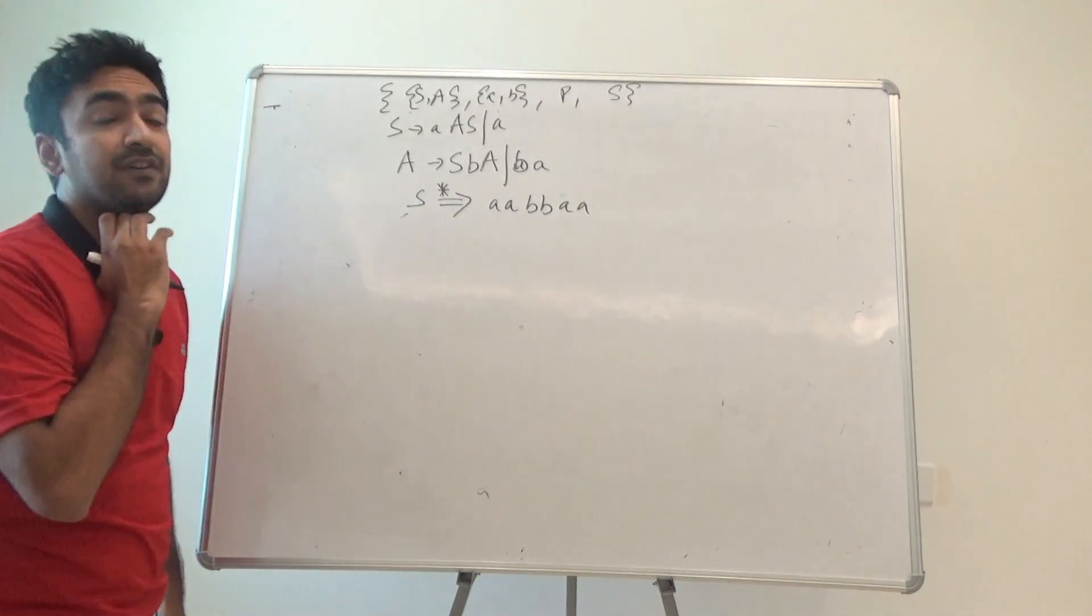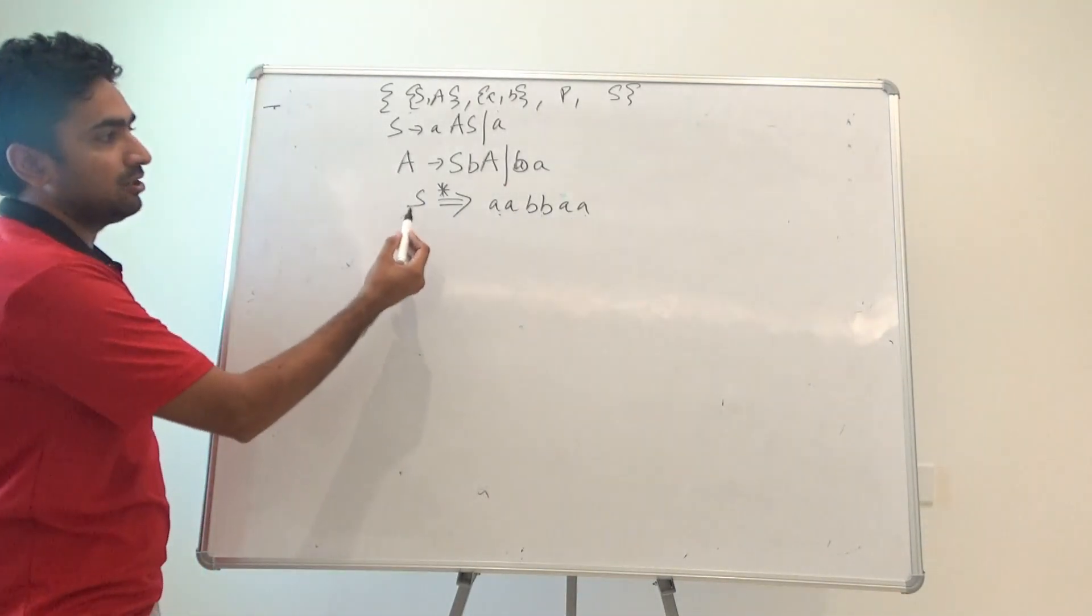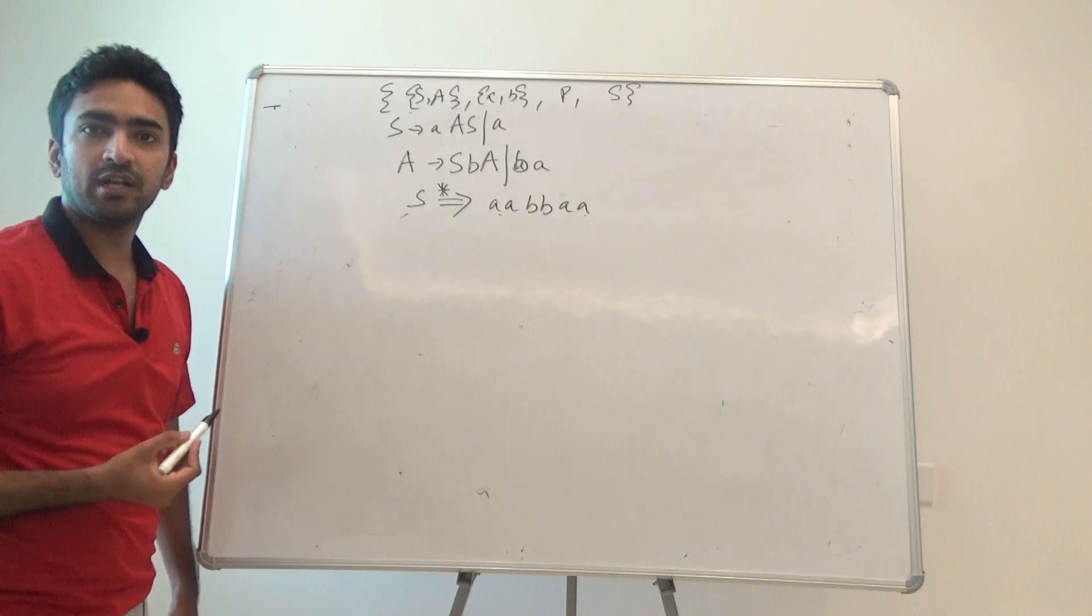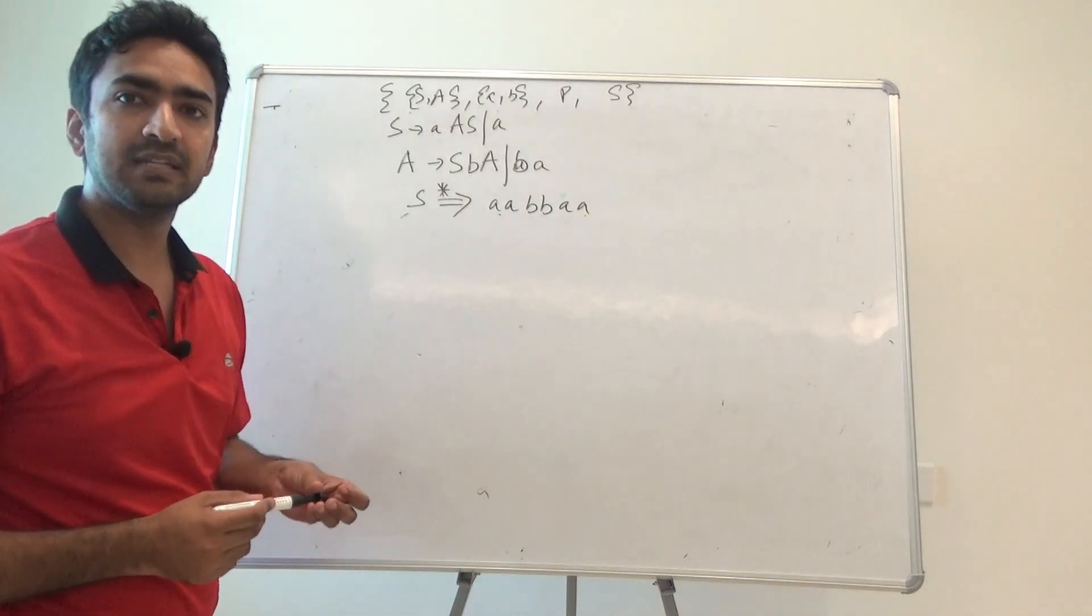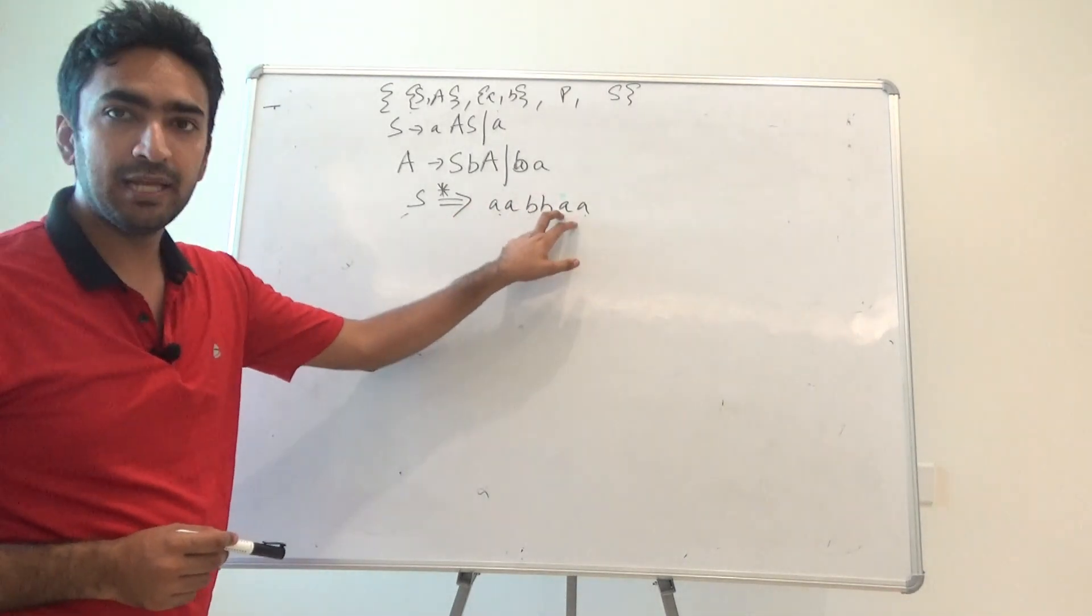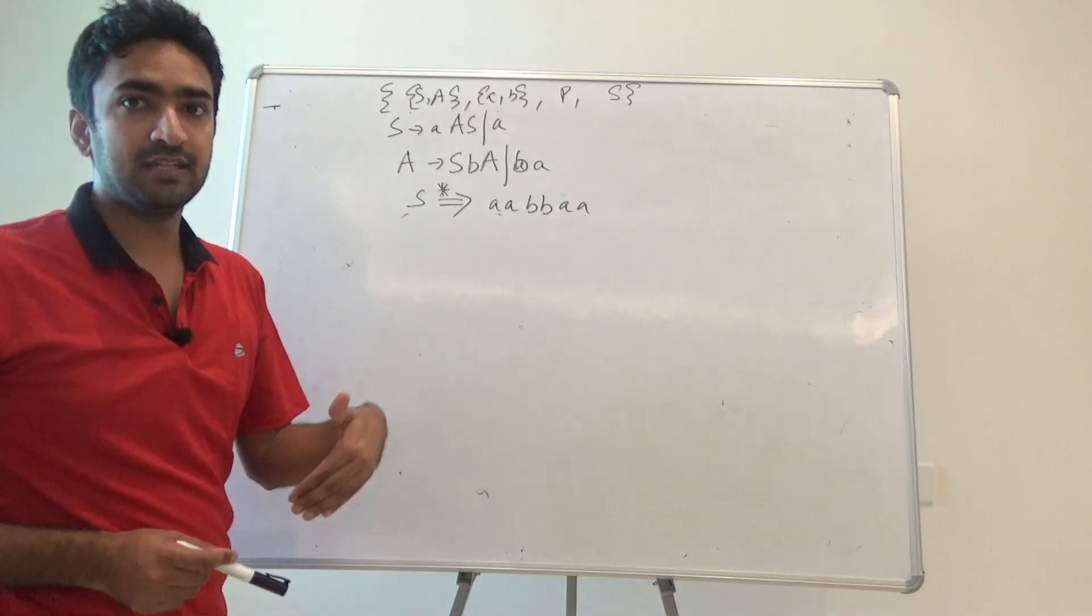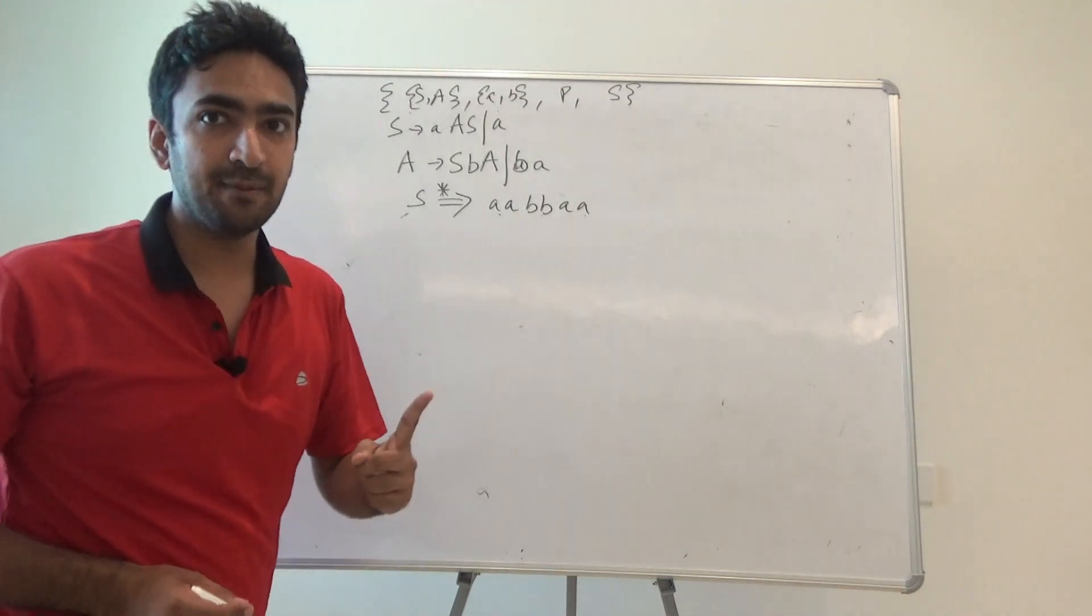Now the important point in this particular case is that S is given as the generator of aabbaa. Now this double arrow and this star—what does that signify? That basically signifies the concept that we are going to derive aabbaa, but there are certain steps that we will be following.